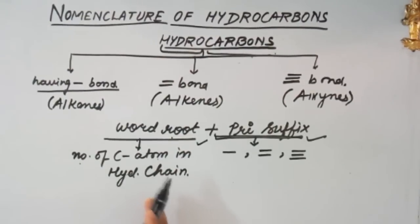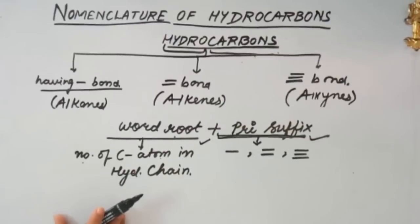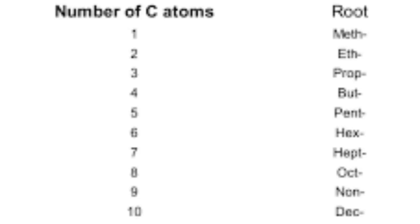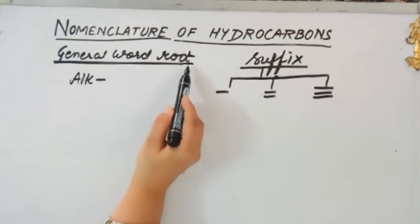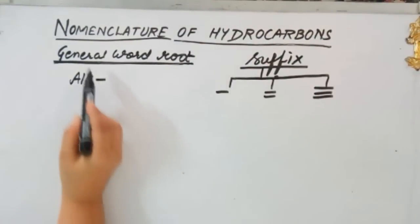Let's look at the table showing the word root for each carbon count. If there is one carbon atom, the word root is meth; two carbons — eth; three carbons — prop; four carbons — but; five carbons — pent; six carbons — hex; seven carbons — hept; eight carbons — oct; nine carbons — non; and ten carbons — dec.